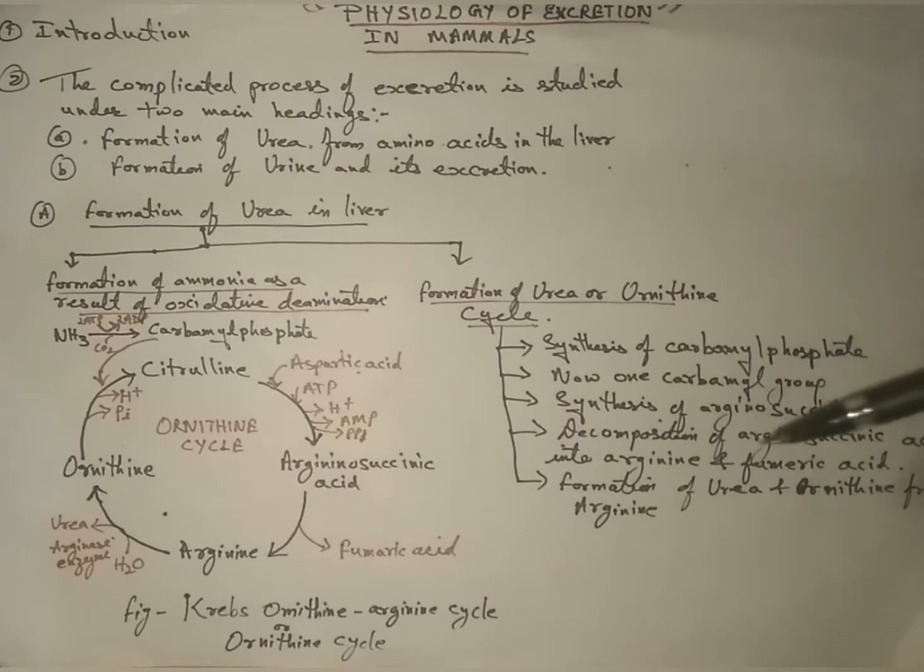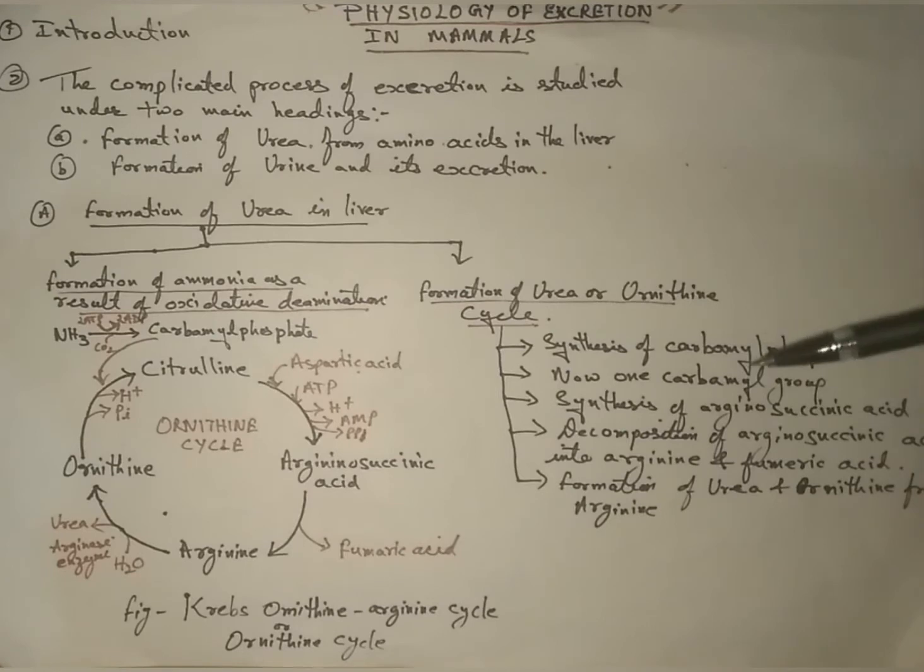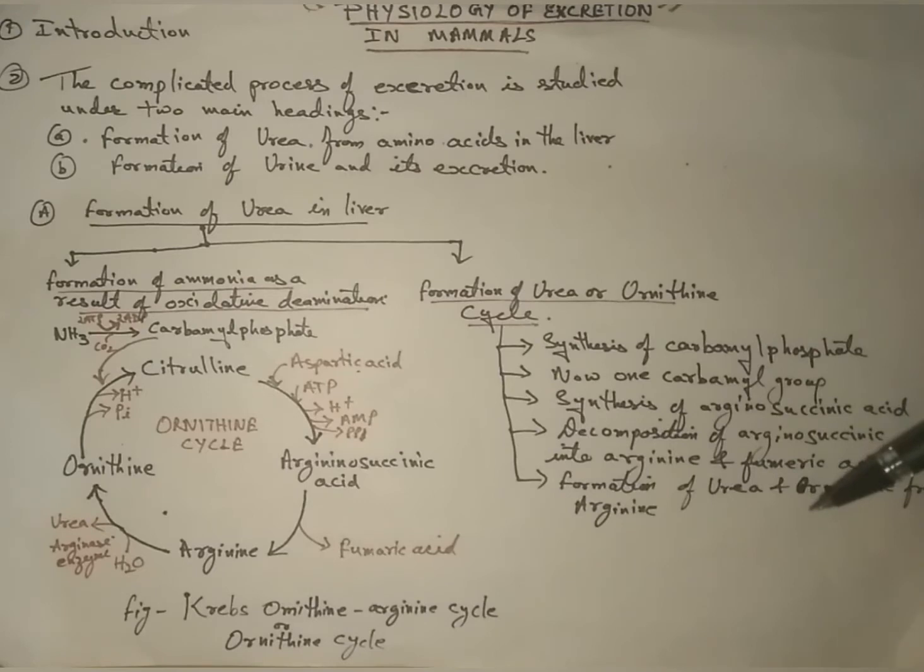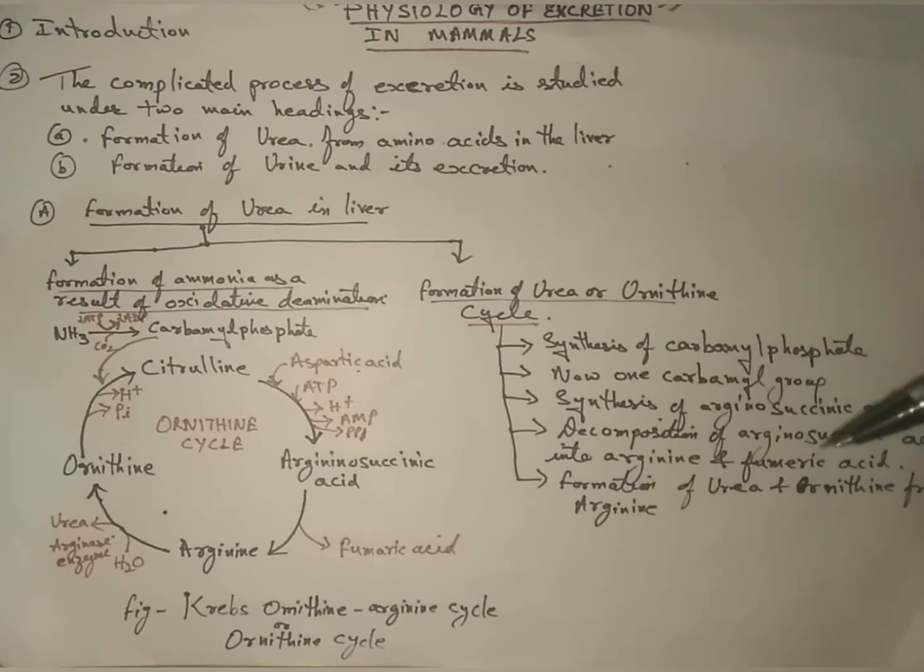The process of removing metabolic waste is called excretion. Without excretion, toxic waste would continue to circulate throughout the body. Example wastes are nitrogenous waste in urine and carbon dioxide from lungs.